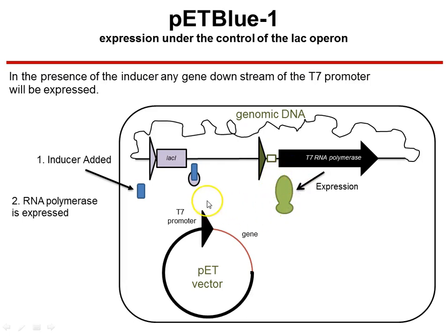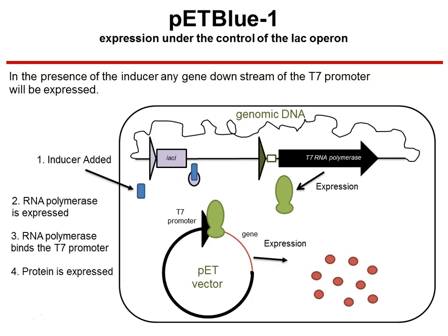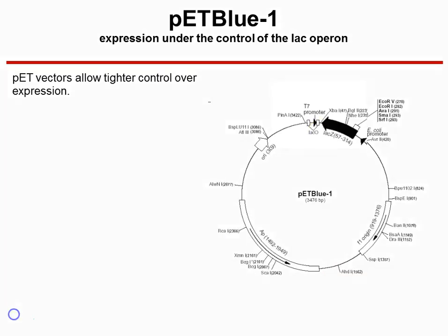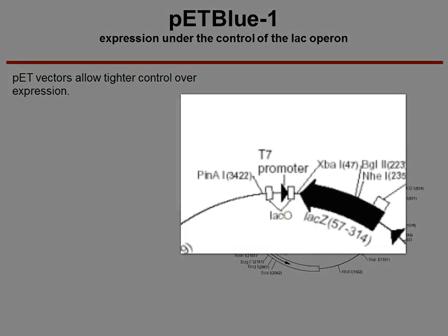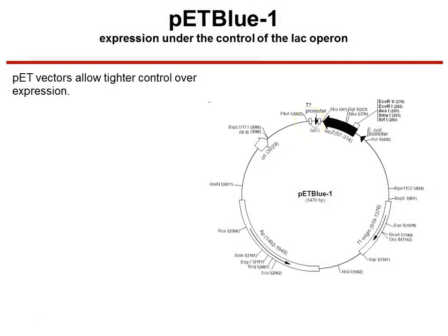That RNA polymerase will bind to the T7 promoter, which is only found on the PET vector, and that will then cause the production of mRNA and the expression of our protein. Looking again at our PET vector, you'll see that the T7 promoter is located here and is straddled on either side by LAC operators. So there are two locations to which the repressor can bind, giving us tight control over the production of proteins within our bacterial cells.